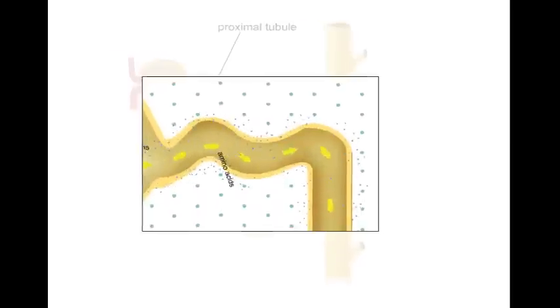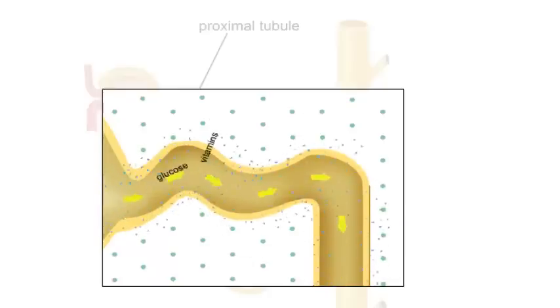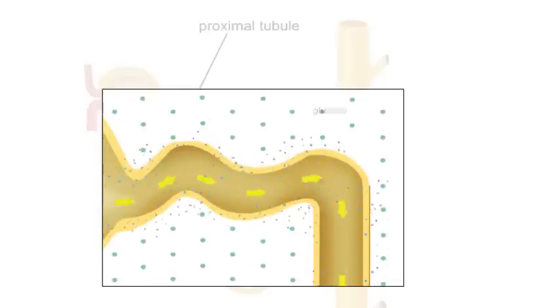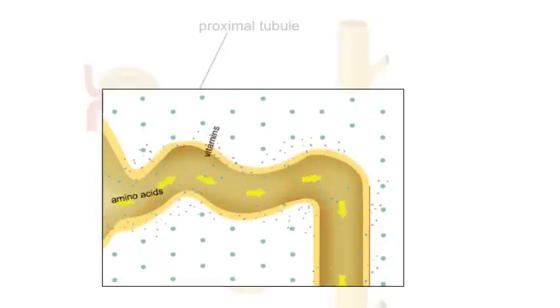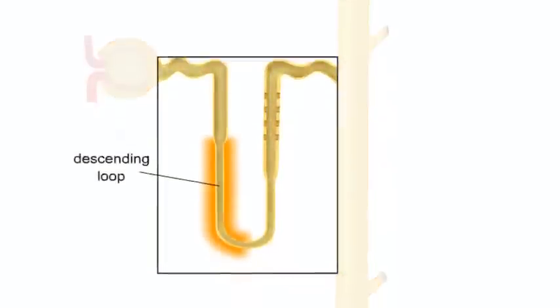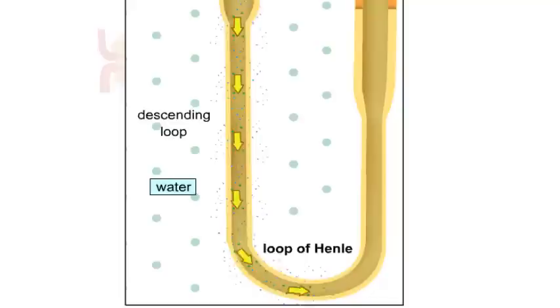Many of the important materials have been reabsorbed into the blood from the filtrate in the proximal tubule. This modified filtrate must make its way down to the loop of Henle, where further modifications will occur. The loop of Henle promotes the reuptake of water and salt from the filtrate.